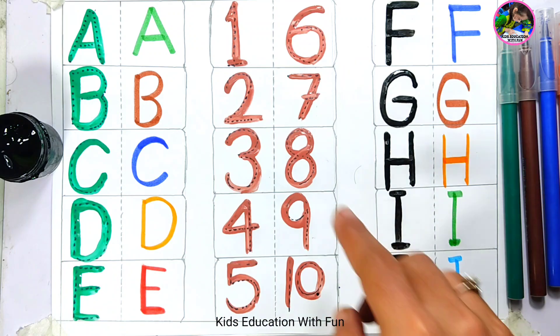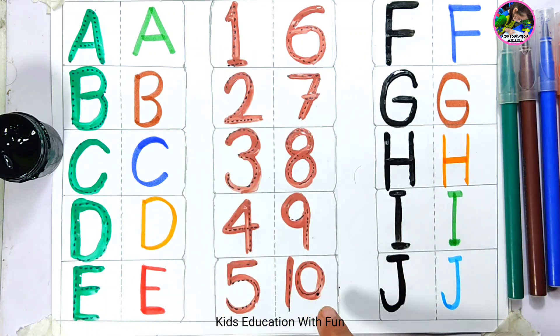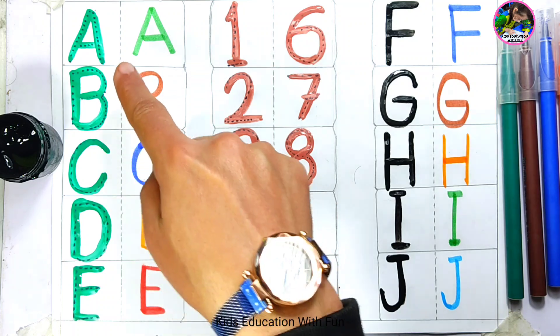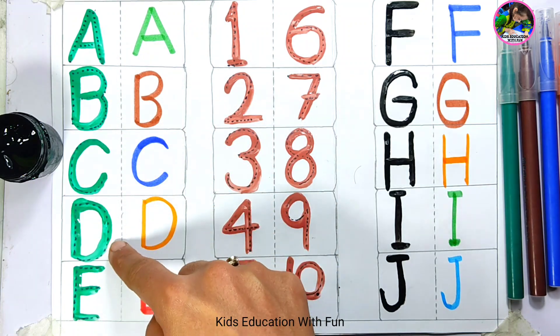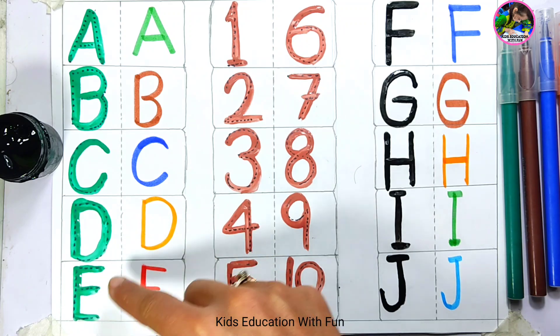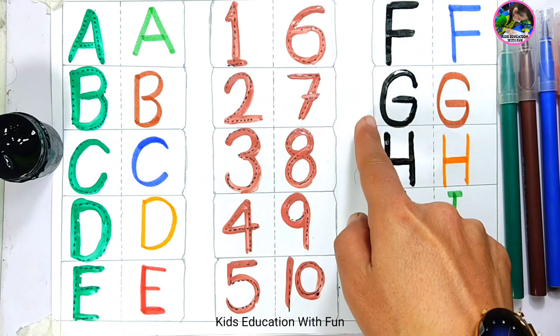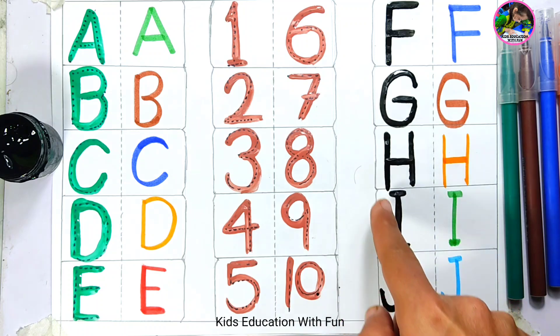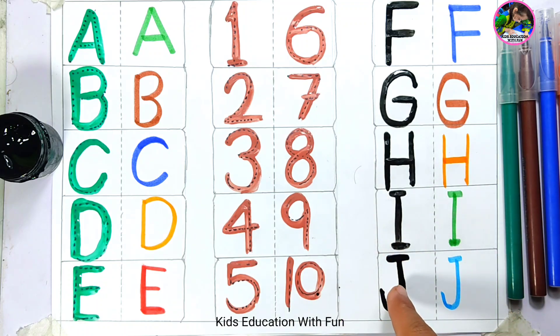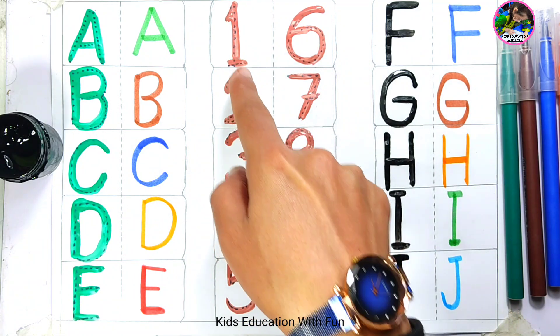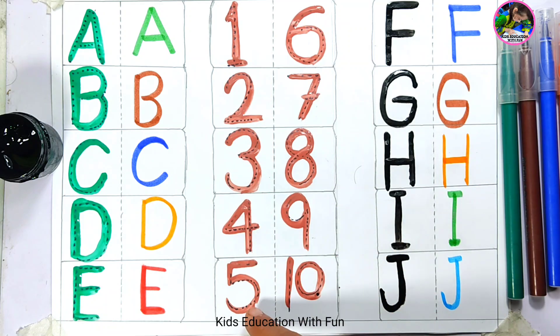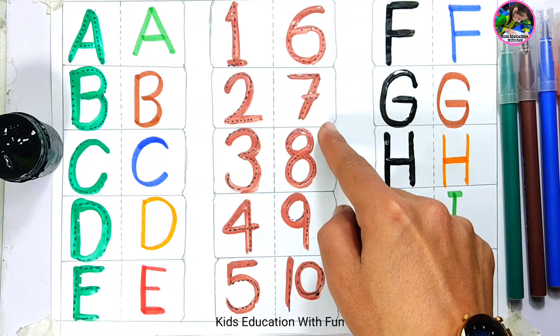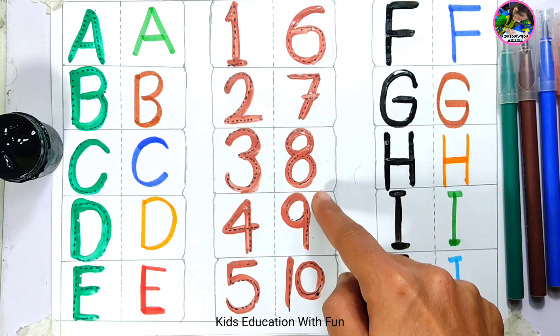Let's revise. A B C D E F G H I J. Number 1 2 3 4 5 6 7 8 9 10.